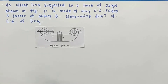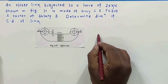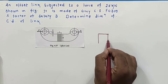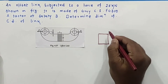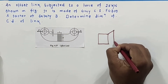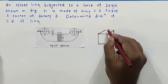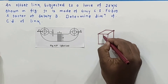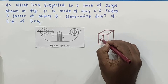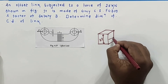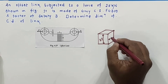We will see another numerical related to eccentric loading. I will read the numerical and we will have to find out the cross section dimension. It has a rectangular cross section and the link is given. I will draw the cross section as mentioned. The thickness is 2T and the width is T.